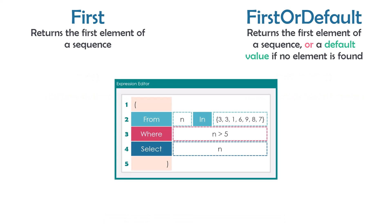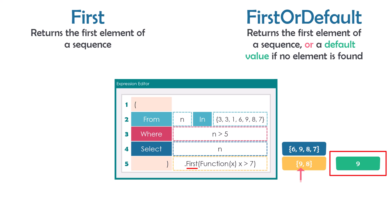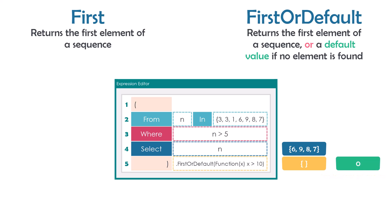Here is a query with an array of seven numbers and a condition to get only numbers greater than five, giving a collection of four numbers. Using First with a lambda expression for numbers greater than seven filters to two numbers, and First returns the first one from that collection. The same result is returned using FirstOrDefault. If I change the condition to numbers greater than 10, the result is empty and First throws an InvalidOperationException. But FirstOrDefault returns zero as the default value because there are no elements in the sequence.